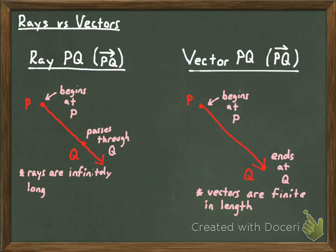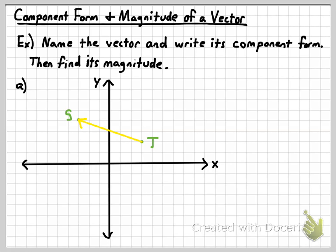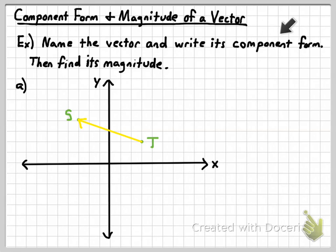So let's take a look at some of the problems you would need to work with involving vectors. One of the things you're going to need to be able to do is write the component form and find the magnitude of a vector. In this example, and a couple like it, we're going to name the vector that you see in the picture, write its component form, and then find its magnitude.